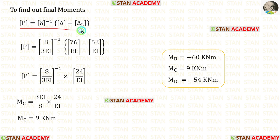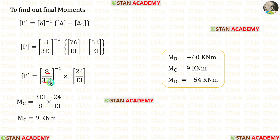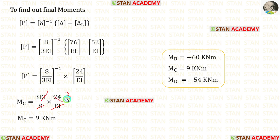Now we have calculated everything in the formula. Applying the values and adding the two matrices: 8/(3EI) inverse equals 3EI/8. The EI terms cancel out. 3 × 8 = 24, and 3 × 3 = 9. So in this analysis, we have calculated all the final moments.